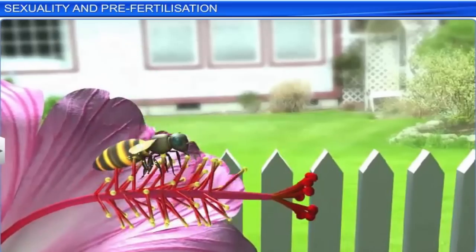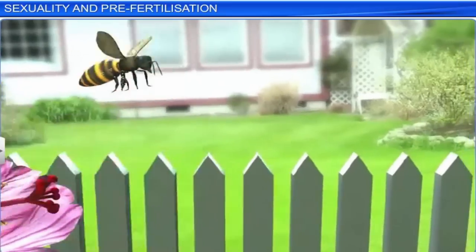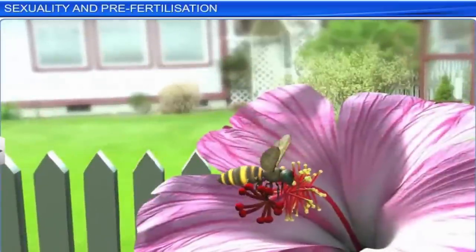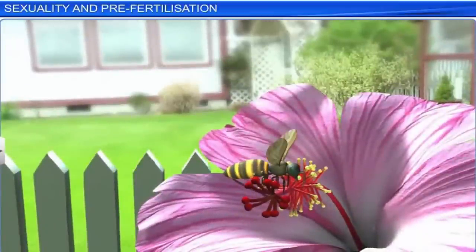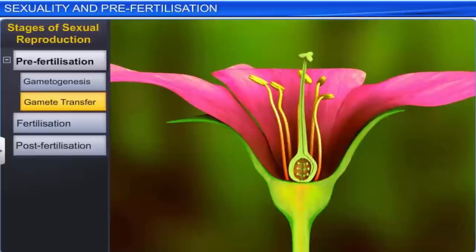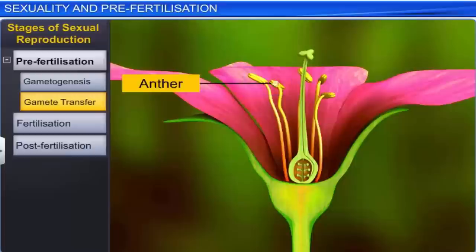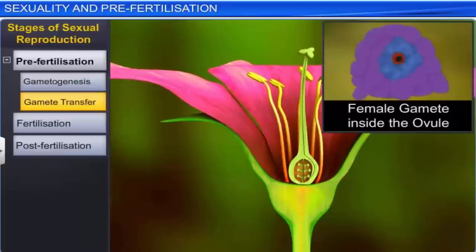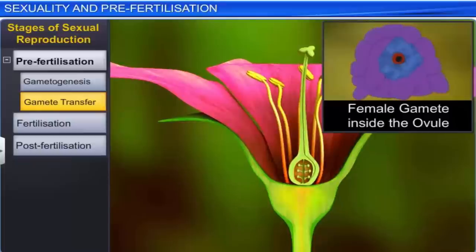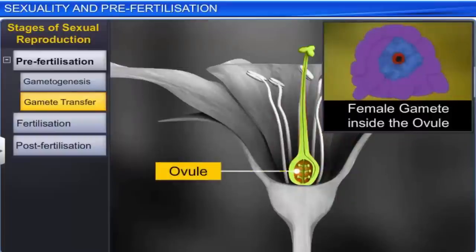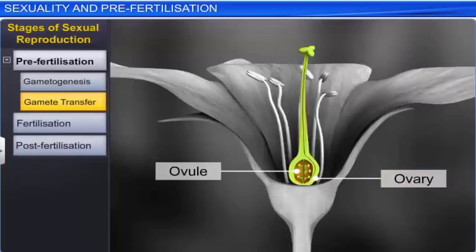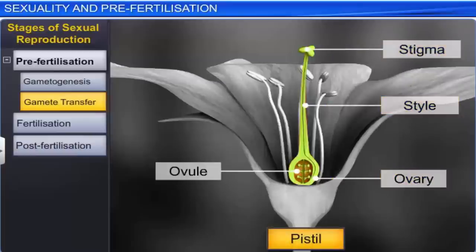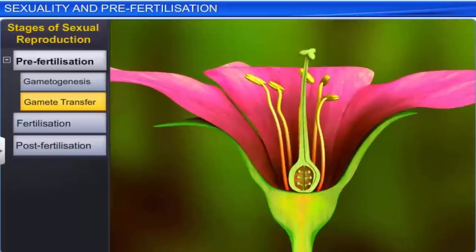While water facilitates the transfer of gametes in lower plants, wind, bees, and insects facilitate the transfer of gametes in higher plants, including angiosperms. In these plants, the anther contains pollen grains which contain the male gametes. The female gametes, on the other hand, lie inside the ovule, a part of the ovary, which together with the style and stigma comprises the pistil. For fertilization, it is necessary for pollen grains to be deposited on the stigma so that they reach the embryo sac.